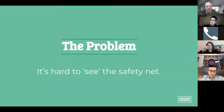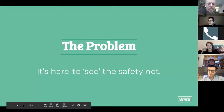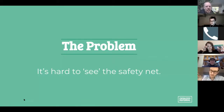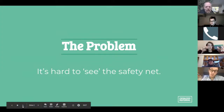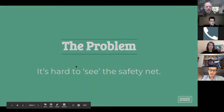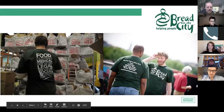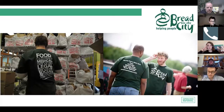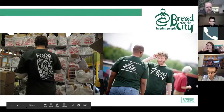I found this problem while working at an organization called Bread for the City, which is one of the main safety net service providers in the District of Columbia. One of the things that Bread for the City helps people do is see the safety net around them. They have the biggest food pantry in the city, a clothing bank, a healthcare center, lawyers, and social workers. On top of everything else, the social workers maintain a database of all the other services to which they refer people.